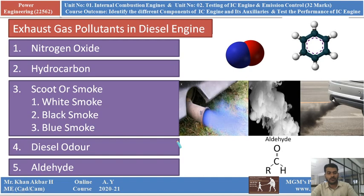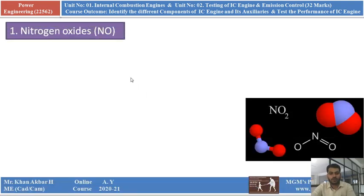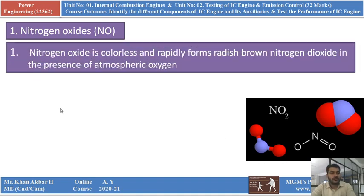The first pollutant is nitrogen oxide. It is a combination of nitrogen and two molecules of oxygen. Nitrogen oxide is colorless and rapidly forms a reddish-brown nitrogen dioxide in the presence of atmospheric oxygen. When nitrogen combines with oxygen, it forms two molecules of oxygen, resulting in nitrogen oxide.